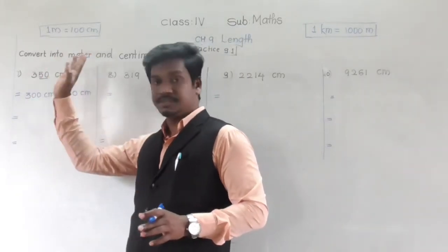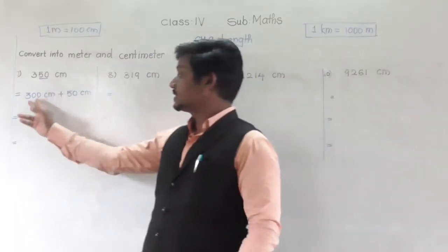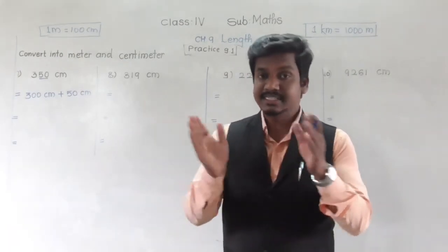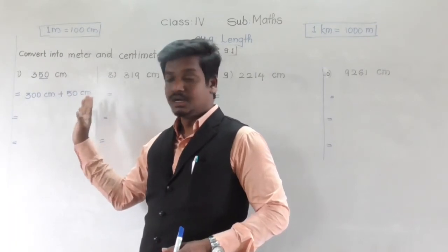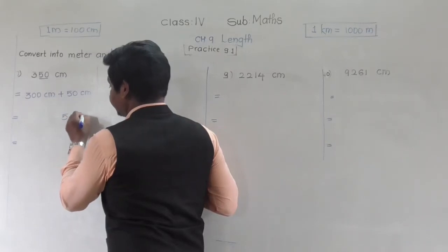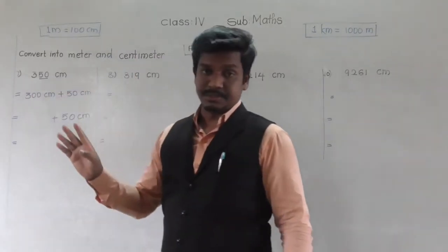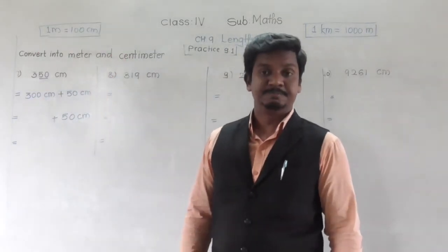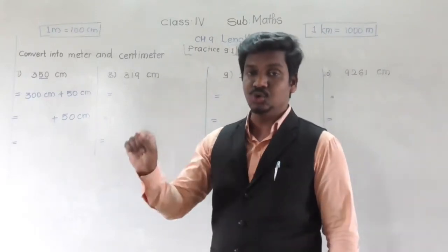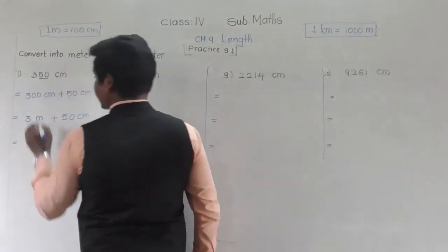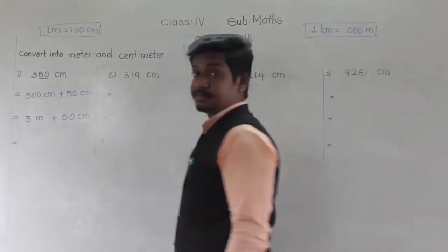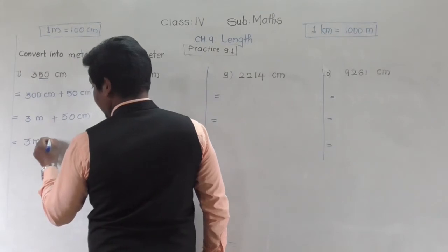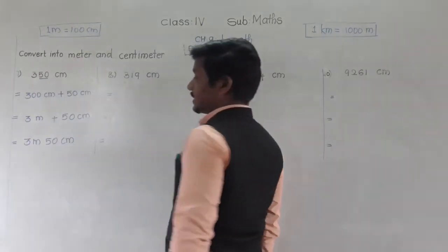We took the 300 separately because 300 centimeters can be expressed as complete meters. The 50 centimeters remains as it is. Now, 100 centimeters equals 1 meter, so 300 centimeters equals 3 meters. Therefore 350 centimeters equals 3 meters and 50 centimeters. These steps are the opposite of what we did in the first question.